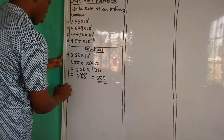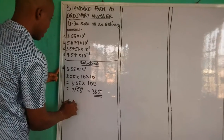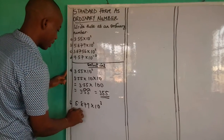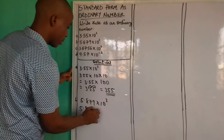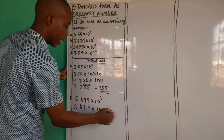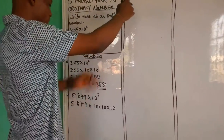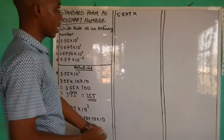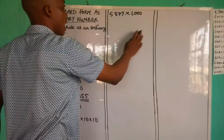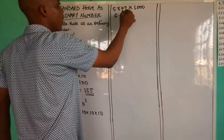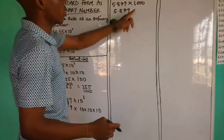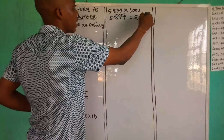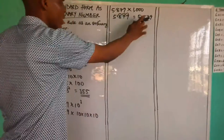For the second one, we have 5.879 times 10 raised to the power of 3. So we have 5.879 times 10 times 10 times 10. That is 10 times 10 is 100, and 100 times 10 is 1000. So we bring out 5.879 and move to the right 3 times, giving us 5,879 as an ordinary number.